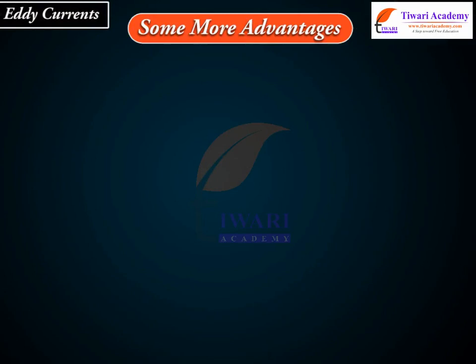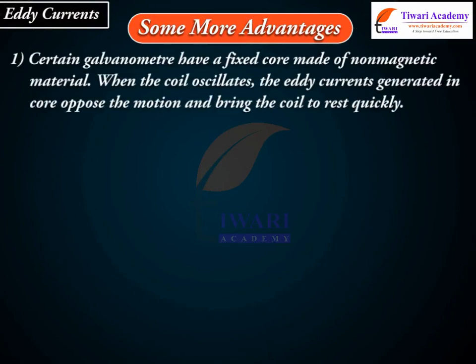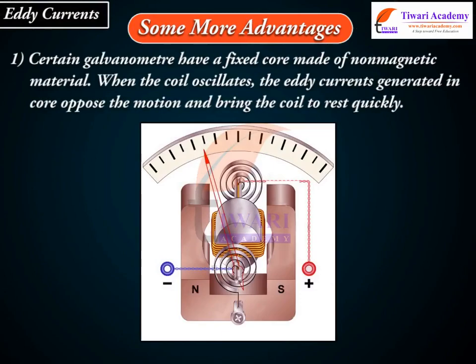Some more advantages. First, certain galvanometers have a fixed core made of non-magnetic material. When the coil oscillates, the eddy currents generated in the core oppose the motion and bring the coil to rest quickly.